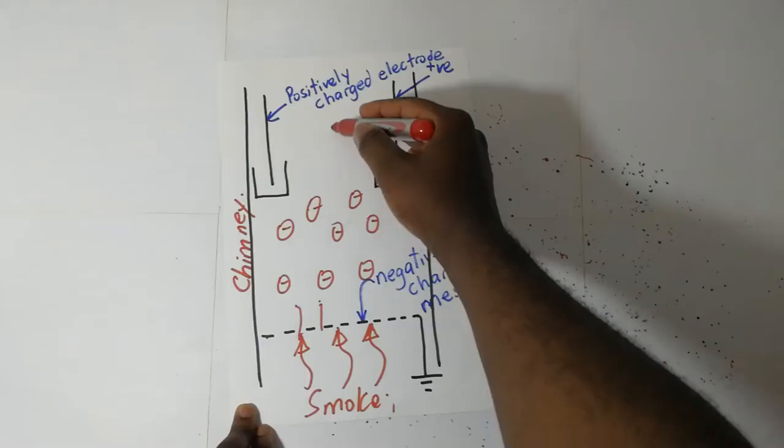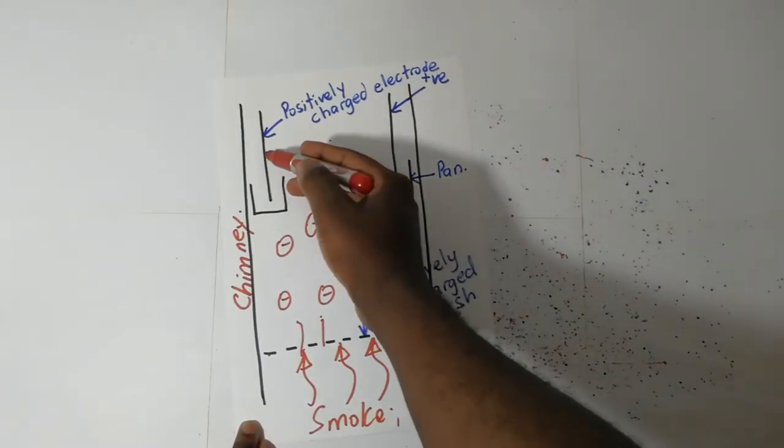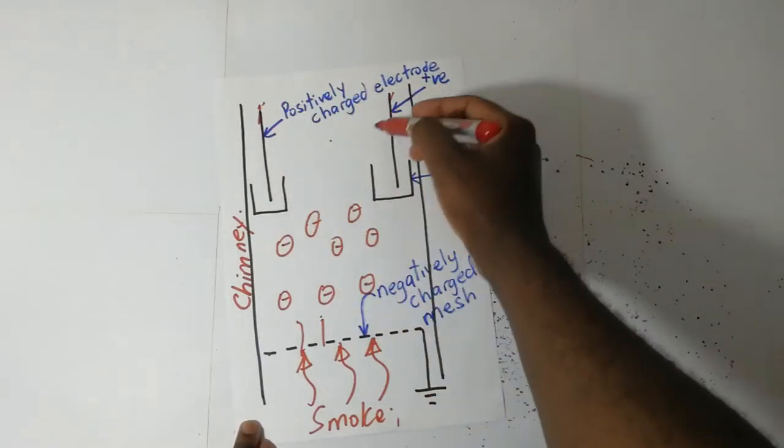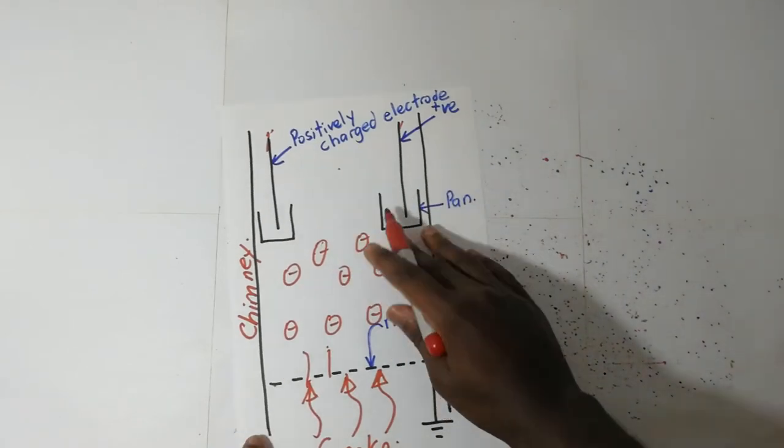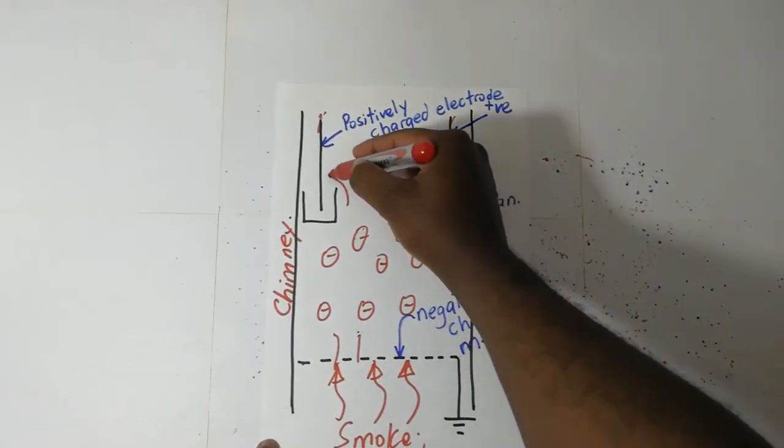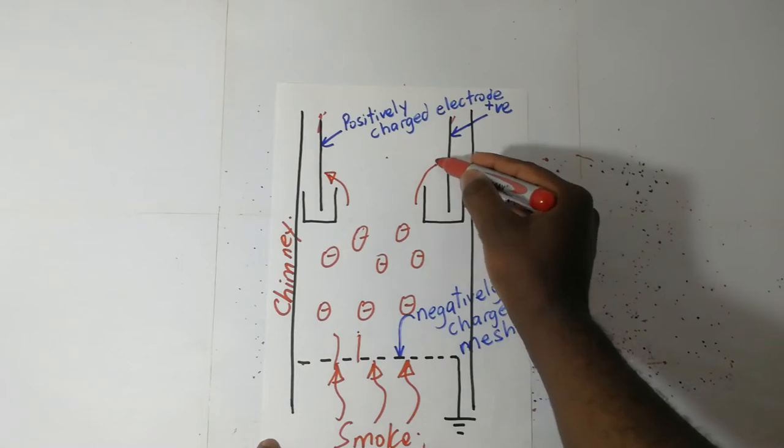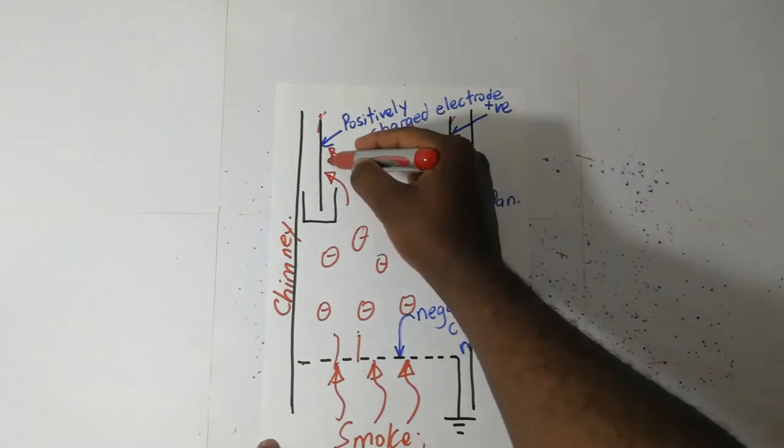As they gain that negative charge as they move up, they come in here. Remember these electrodes right here are positively charged. So these negatively charged particles are attracted to the sides.